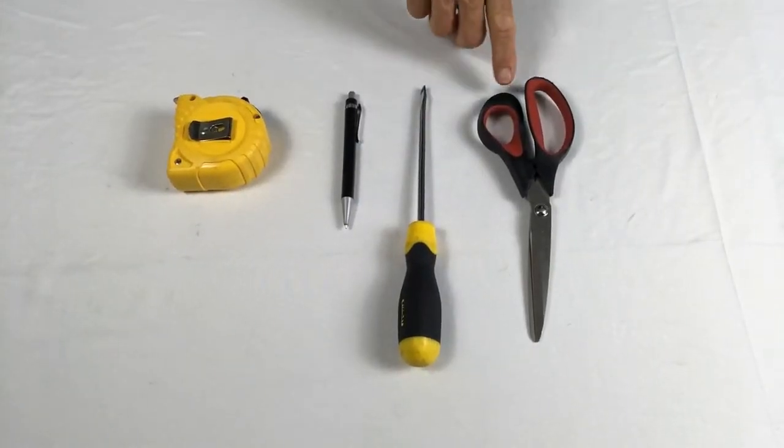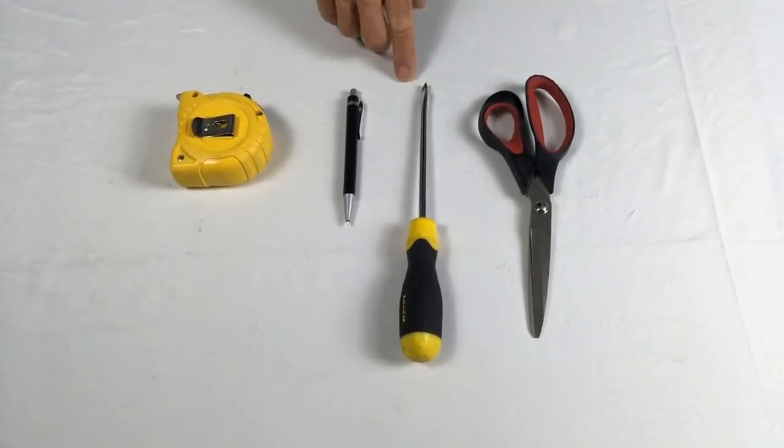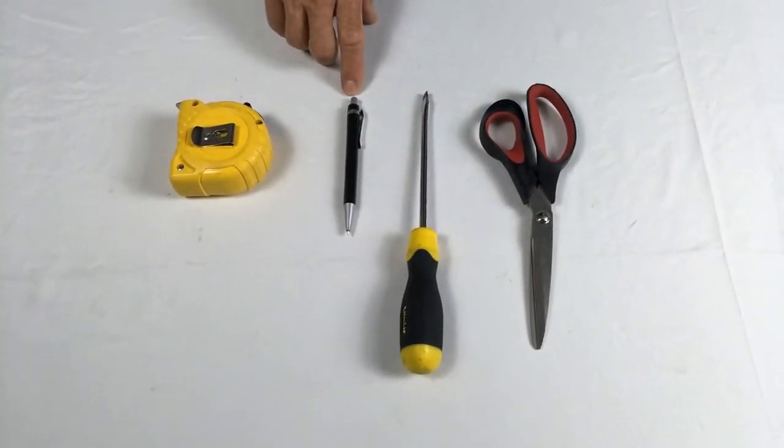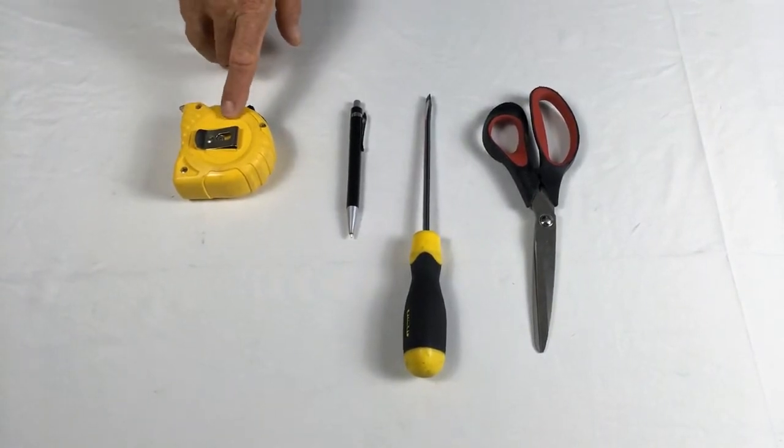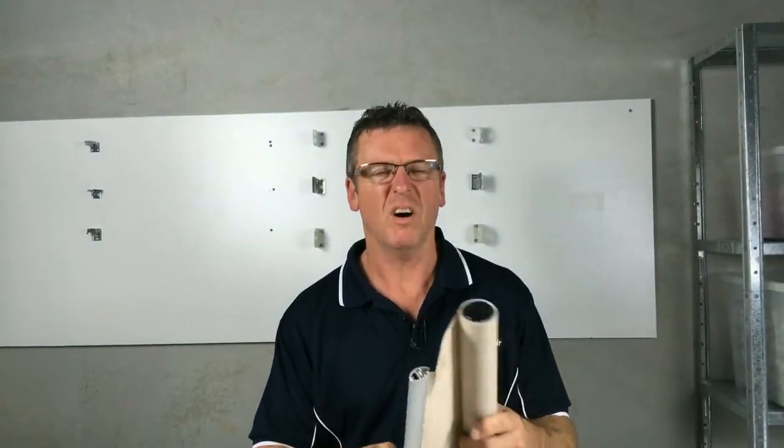For this job you will need a pair of scissors, a flat screwdriver, a biro or pencil, and a tape measure. Okay, so you've torn your roller blind. I did this one with scissors but we'll call it a tear.